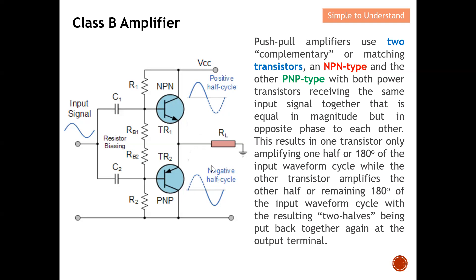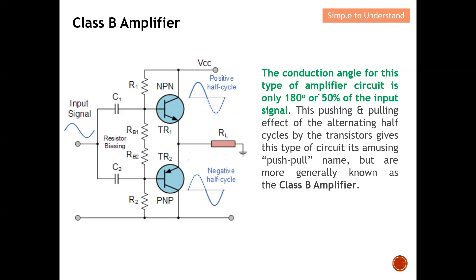The conduction angle for this type of amplifier circuit is only 180 degrees, or 50% of the input signal. The positive half is handled by the NPN transistor and the negative by the PNP transistor, so each works 50% of the time. In short, this pushing and pulling effect of the alternating half cycles by the transistors gives this type of circuit the name push-pull amplifier, more generally known as Class B amplifier.